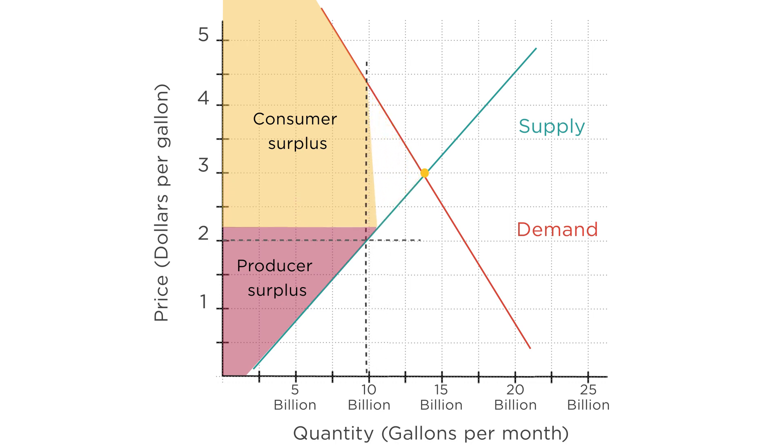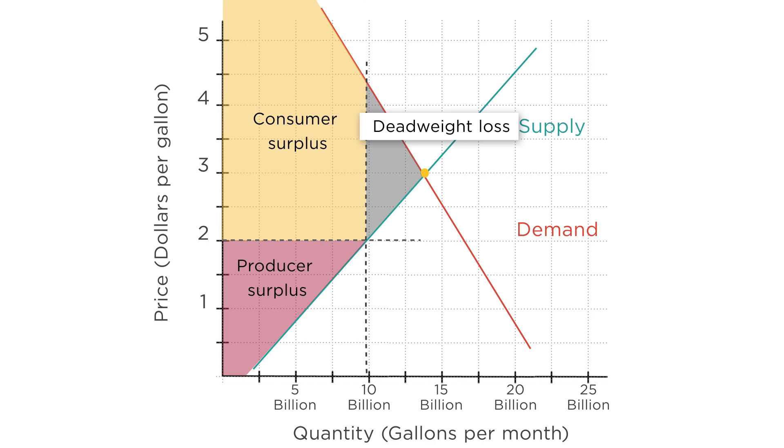The bottom line is that competitive equilibrium, where supply equals demand, is the point that makes society as a whole the best off. Any attempt to deviate from this equilibrium will lower total welfare.